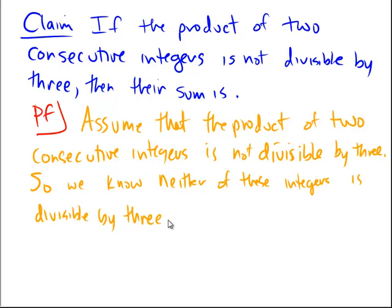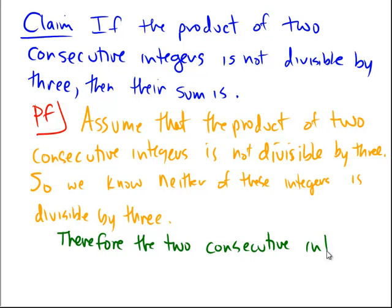So since neither of the integers themselves must be divisible by 3, therefore, the two consecutive integers, none of them can be equal to 3k, because 3k is a multiple of 3.